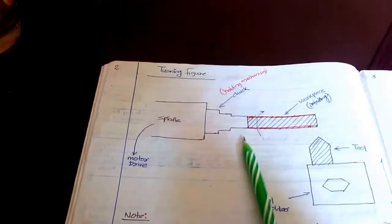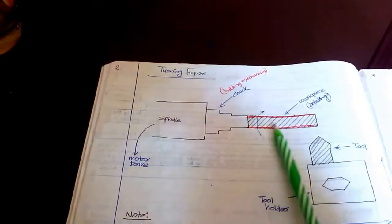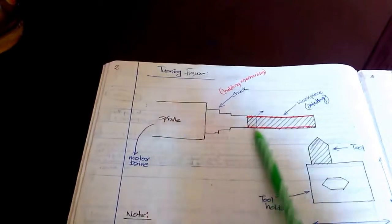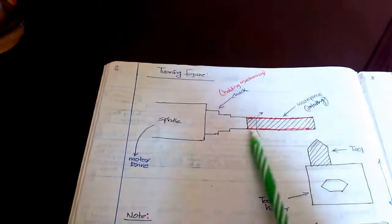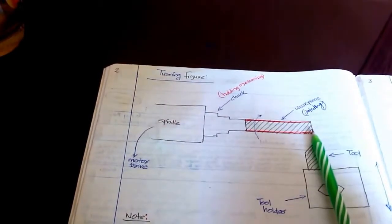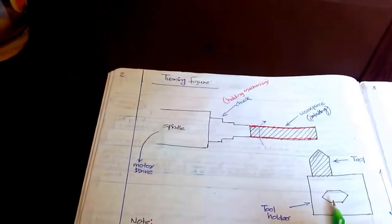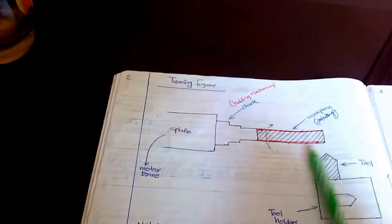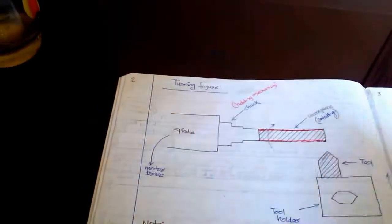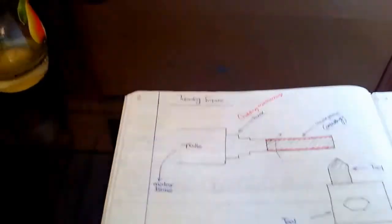The centerline of the workpiece is X zero. So from that X zero, the backward movement is X positive. From that X zero, the forward movement is X negative.